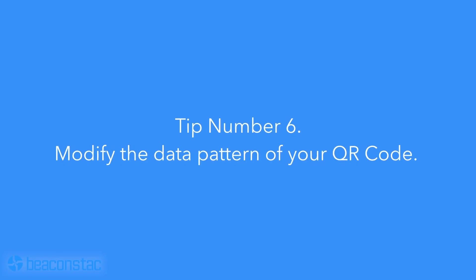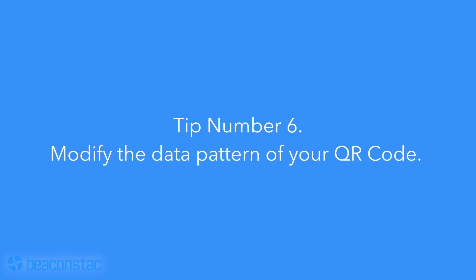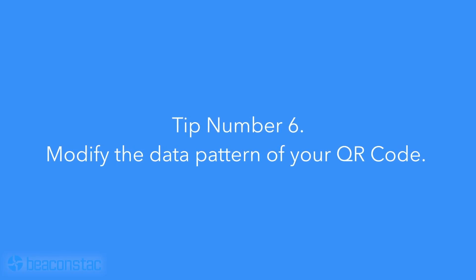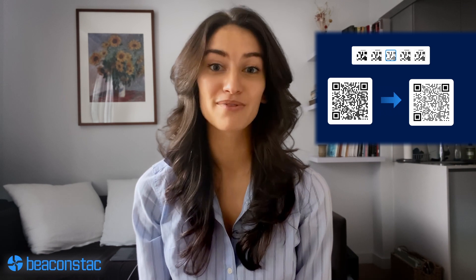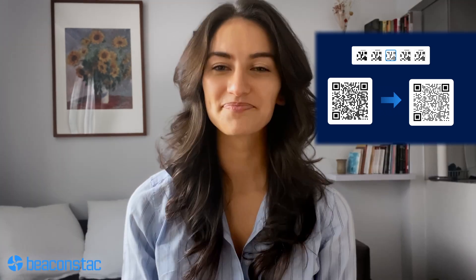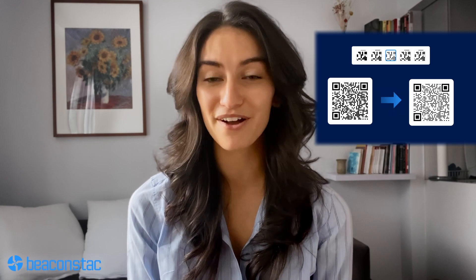Tip number six: modify the data pattern of your QR code. You can change the pattern of the QR code to make it more visually appealing. The data pattern can take on various shapes like squares, circles, diamonds, and so on. Its color can also be changed to match the QR code's overall theme.